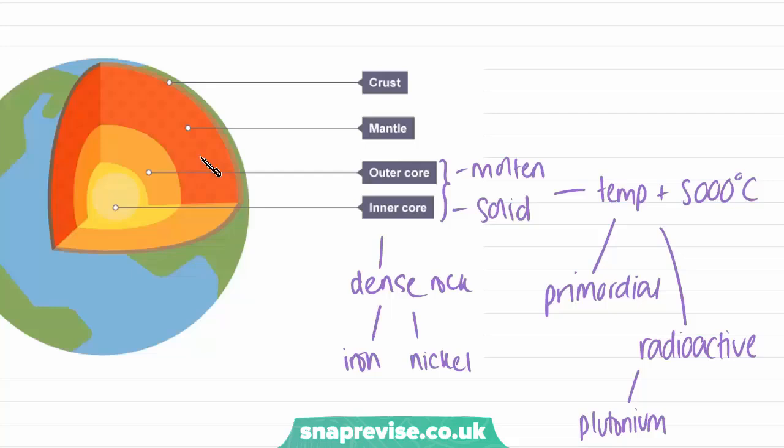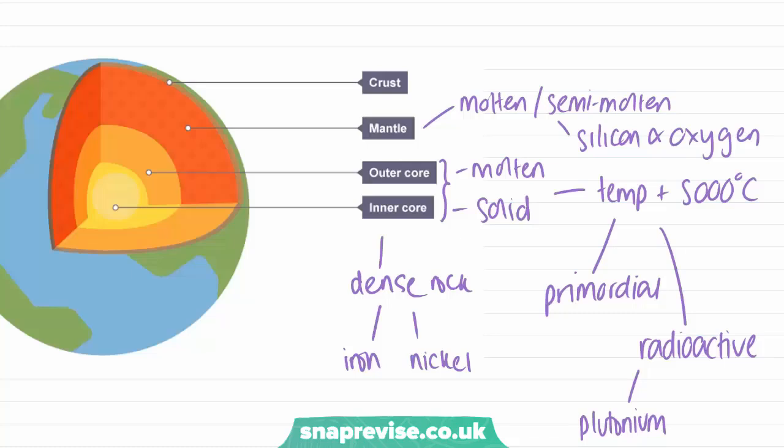Then we have our mantle, which is this section in red here. The mantle is molten, and also has parts of it which are semi-molten. It is mainly composed of rocks containing silicon and oxygen.